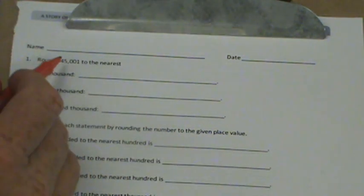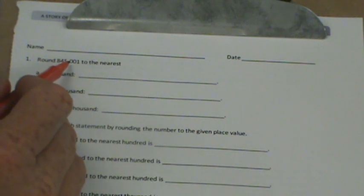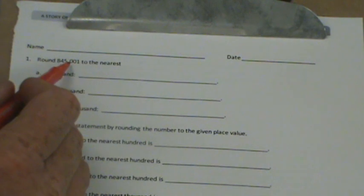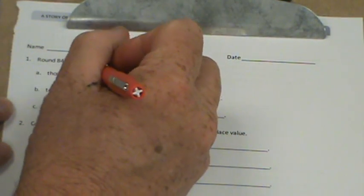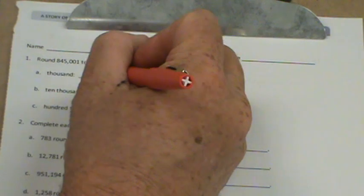Let's do thousand first. That's the 5. We can look right here and see that there's a 0 right behind the 5. We know that 1 must be less than the midway point, which would be 500. So when we round to the nearest thousand, these would stay the same, the 8, 4. Will the 5 stay the same? Yes, because this 1 is less than 500. So the 5 would not change.